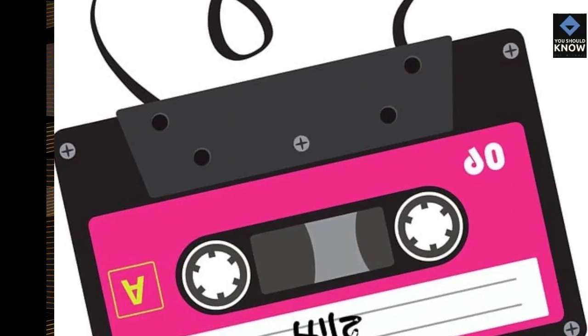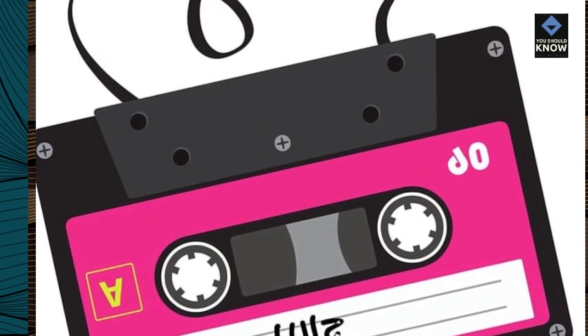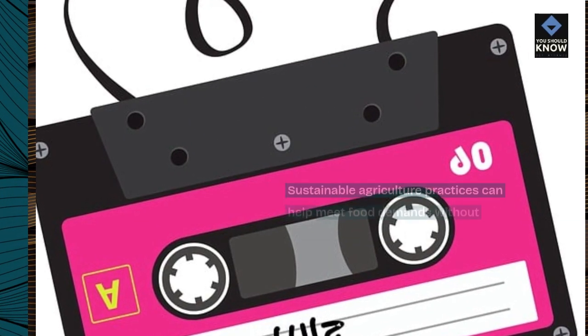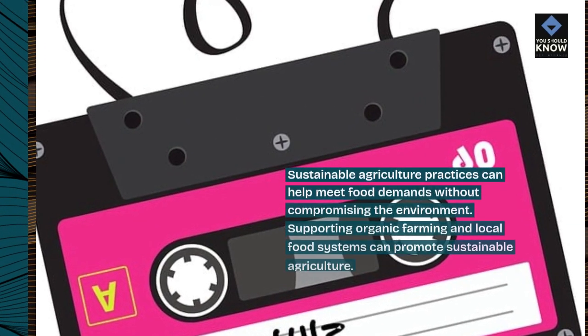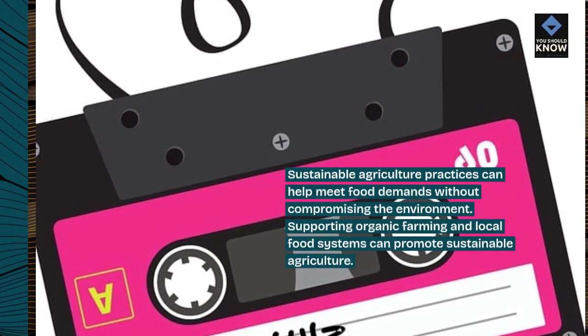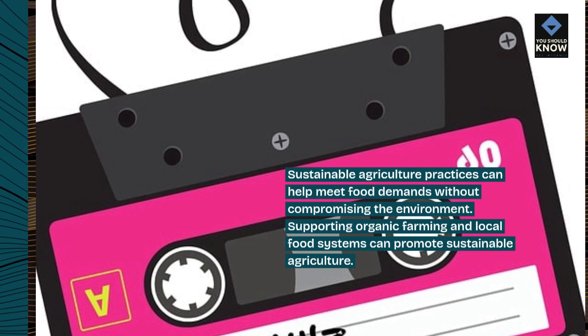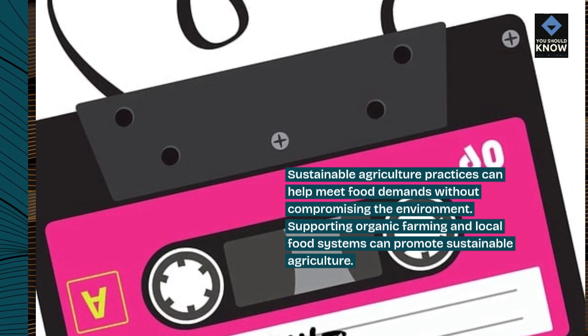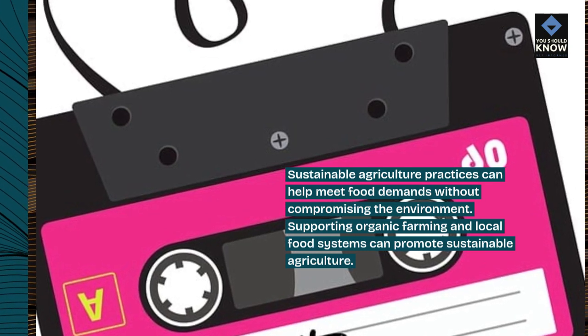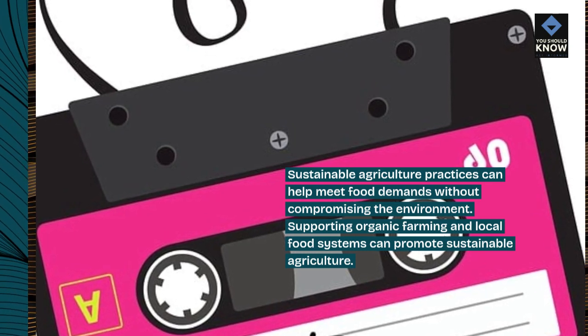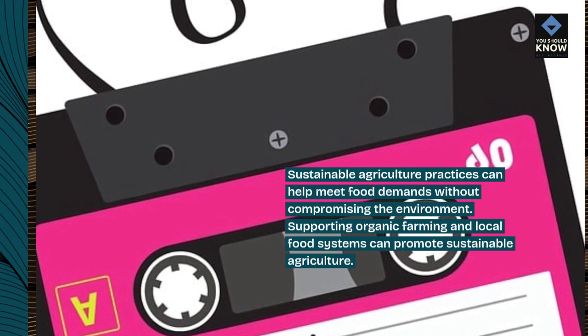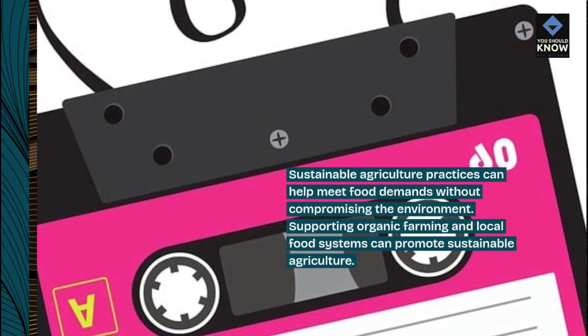Sustainable agriculture. Sustainable agriculture practices can help meet food demands without compromising the environment. Supporting organic farming and local food systems can promote sustainable agriculture.